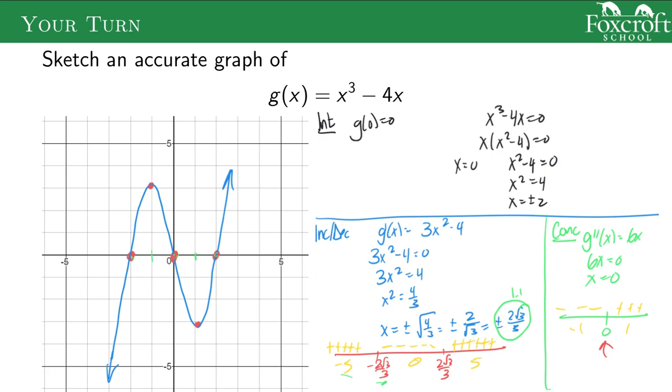And let's just go through. I have my 3 intercepts from my original function. Increasing and decreasing, it's increasing up until that first point.